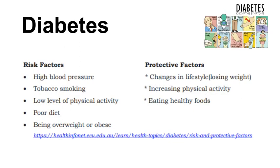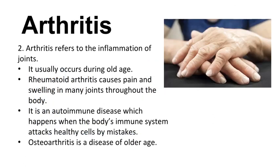Arthritis refers to the inflammation of joints. It usually occurs during old age. Rheumatoid arthritis causes pain and swelling in many joints throughout the body. It is an autoimmune disease which happens when the body's immune system attacks healthy cells by mistake. Osteoarthritis is a disease of older age.